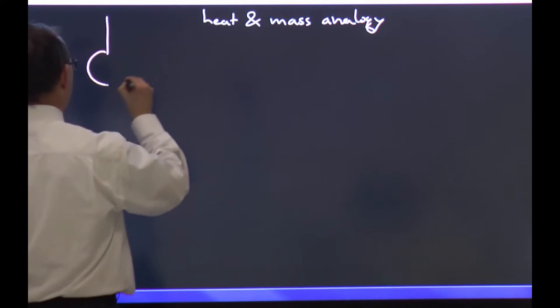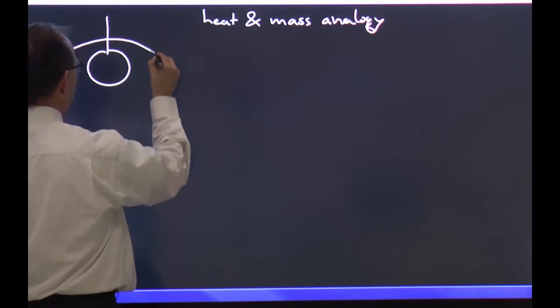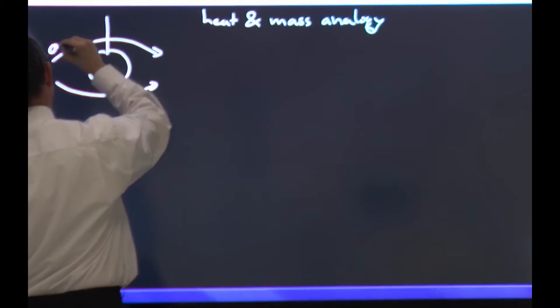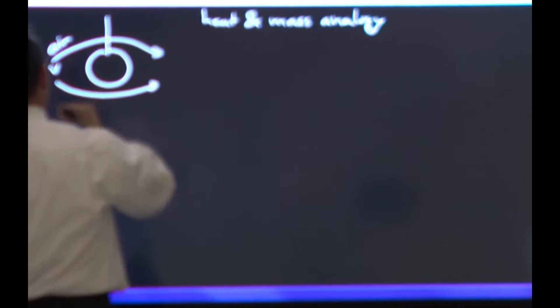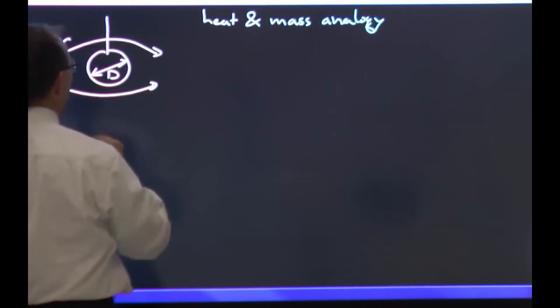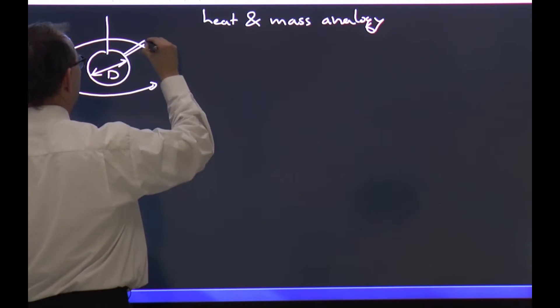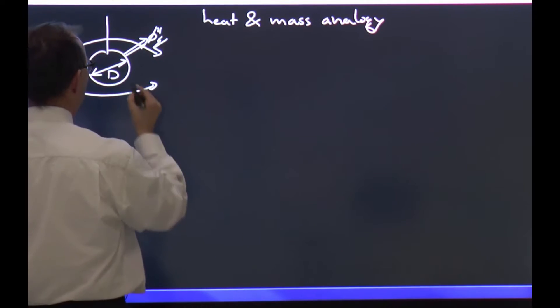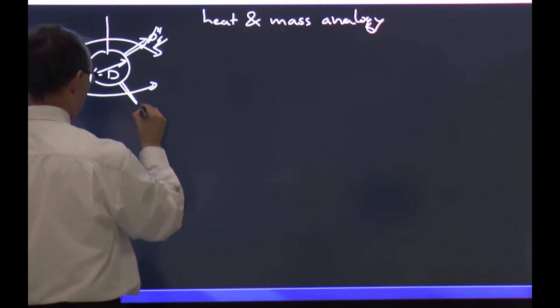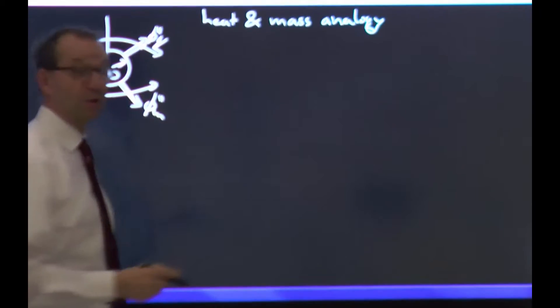So we have a suspended sphere that is in an air flow with velocity v. The sphere has diameter d, and if it's hot then there is heat flux. If it is evaporating slowly we would have a mass flux coming from it.